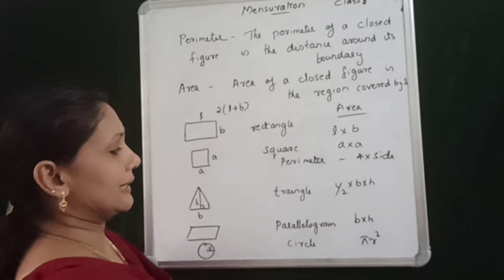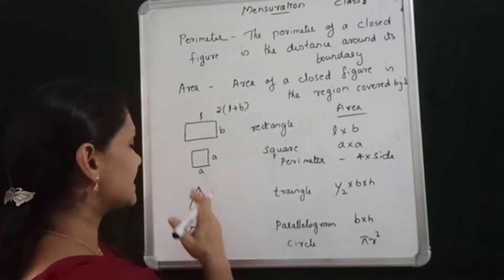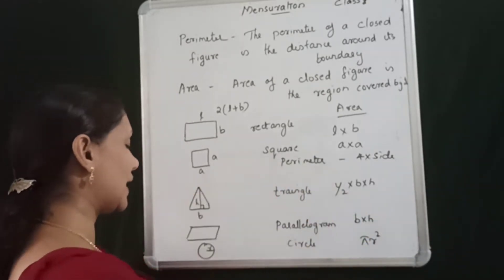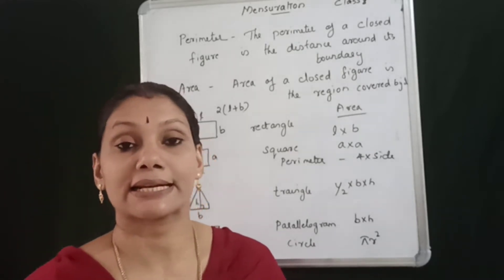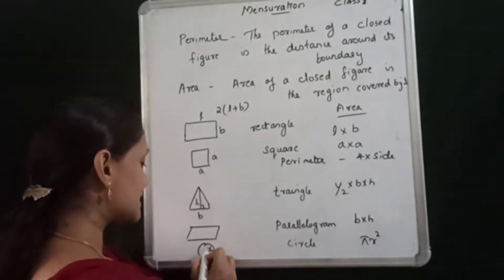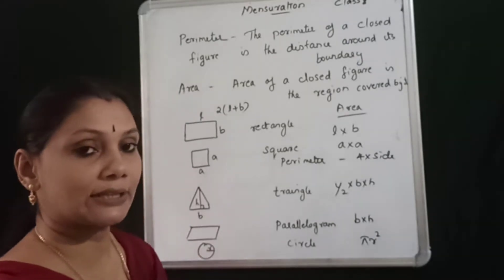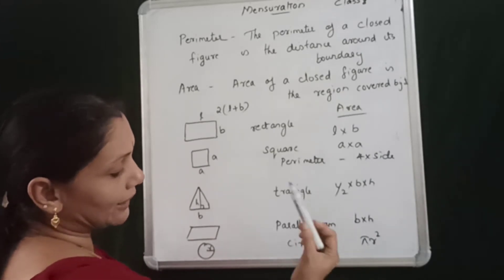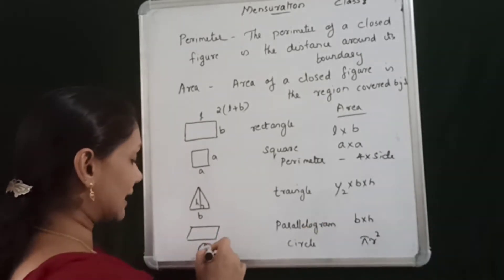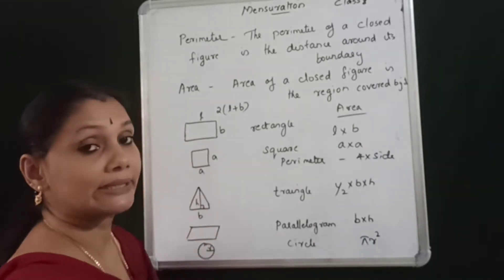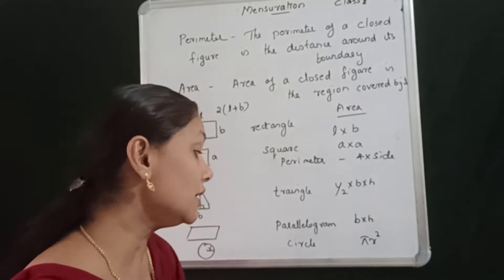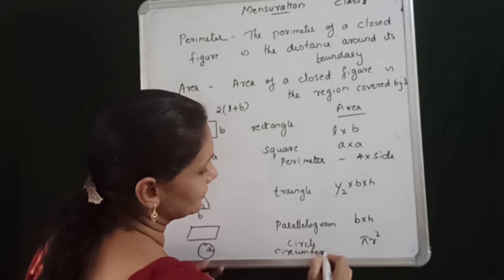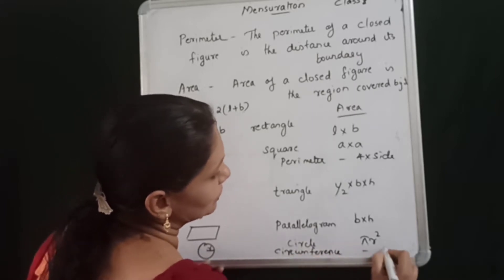There is a triangle — area is half base and height. Parallelogram — area is base and height. For a circle, area is π r squared, where r is the radius. Circle perimeter is circumference, which equals 2πr — that is the boundary.